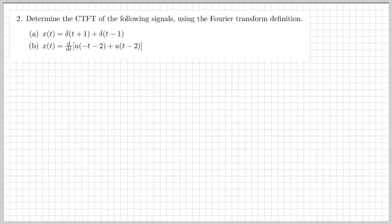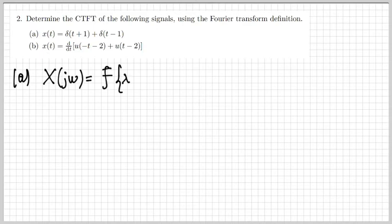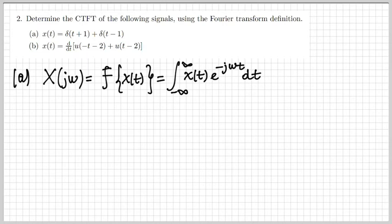The second exercise asks to determine the continuous-time Fourier transform of a couple of signals using the definition of the Fourier transform. Let's start from point A and recall the definition: X of jω, the Fourier transform of a signal x of t, is given by the integral of x of t times e to the minus jωt dt.